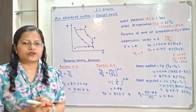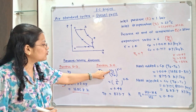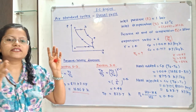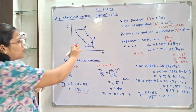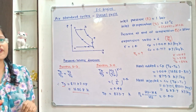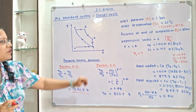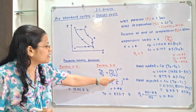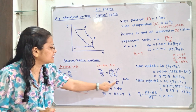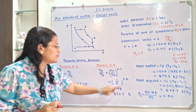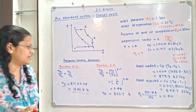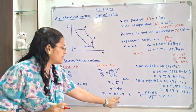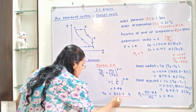Now we will move to process 3 to 4. T4 by T3 equals V3 by V4 raised to gamma minus 1. Process 3 to 4 is the expansion process; the expansion ratio V4 by V3 is given as 6, so V3 by V4 is 1 by 6. Thus 1 by 6 raised to 0.4 equals 0.48. Multiplying by T3, T4 is equal to 823.7 Kelvin.